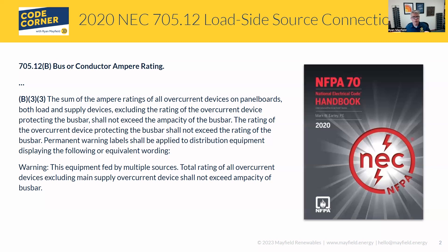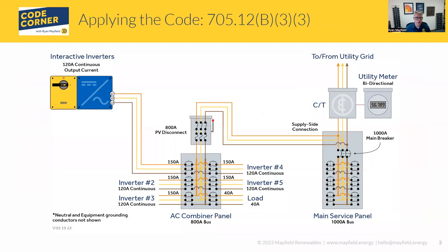And what the code says — this is a little different than B31 and B32 — in the sense that when we're adding all of our different breakers, in this case we're using the rating of the breaker. We're not using the rating of the system output. It's the rating of the breakers that dictates this calculation. So you see that language here: the rating of the overcurrent device protecting the bus bar shall not exceed the rating of the bus bar. So this is both loads and sources. So let's go ahead and take a look at a picture here.